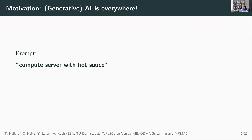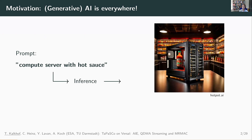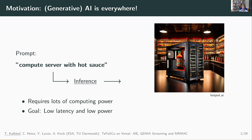Generative AI services are available, so you could want to use one of these services, prompt a compute server with a hot source. Then the service will do some inference, and you get an image like that. These inference tasks require lots of computing power, and the goal is to have low latency and also as low power consumption as possible.